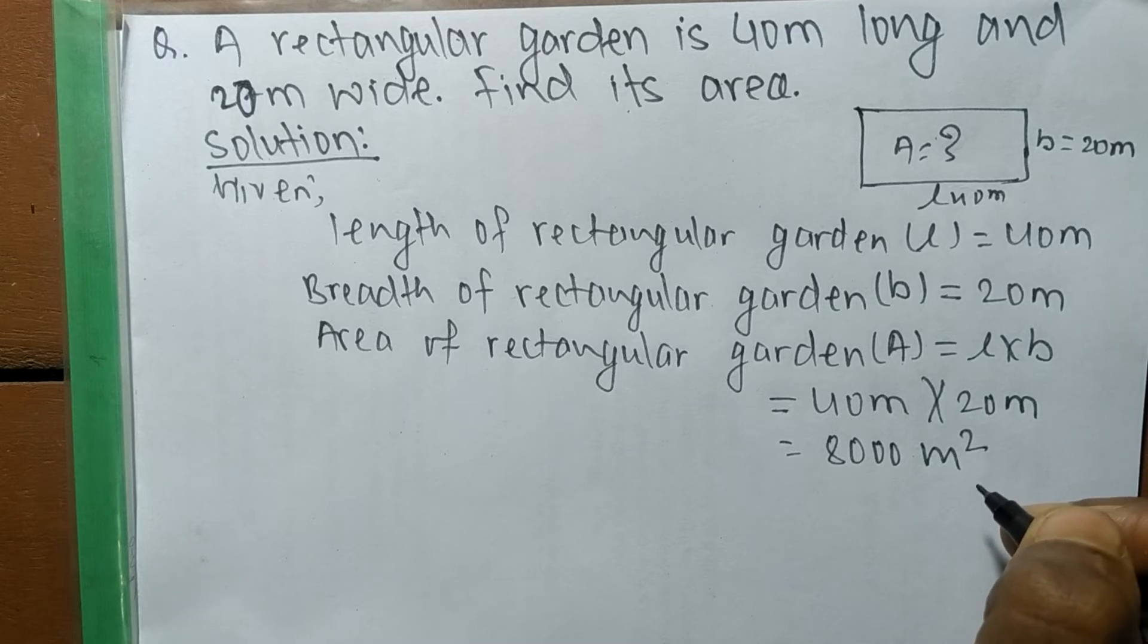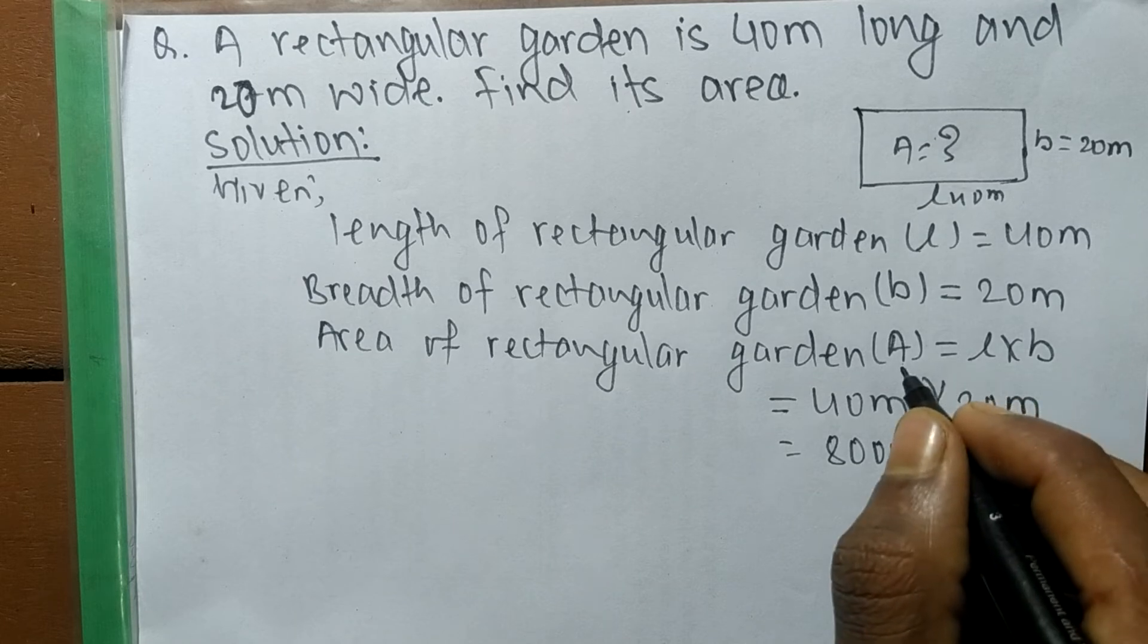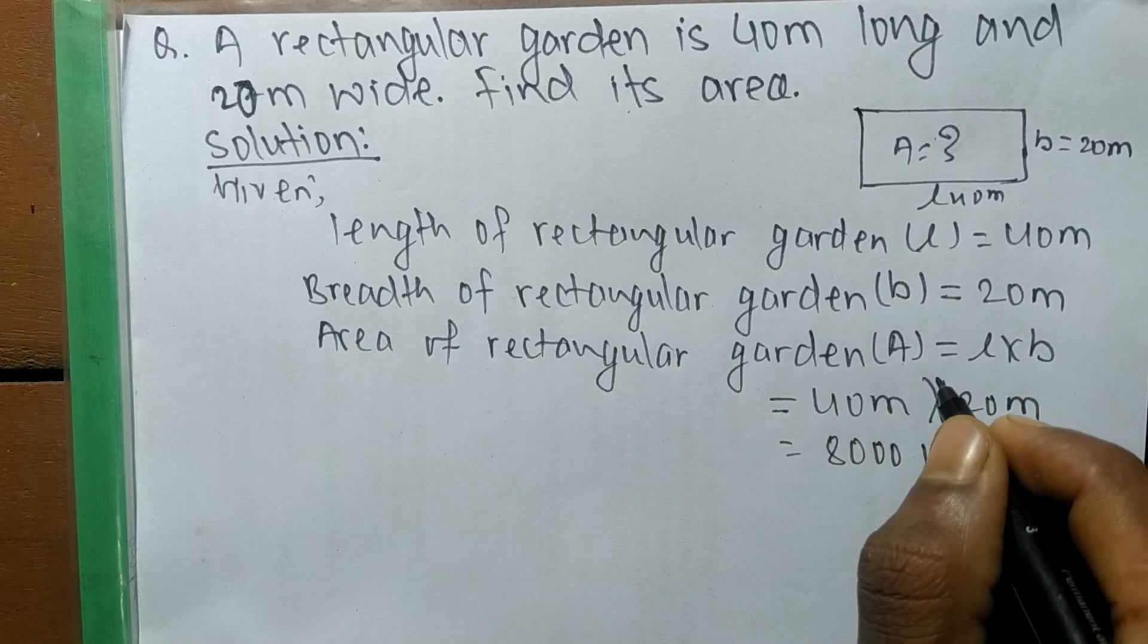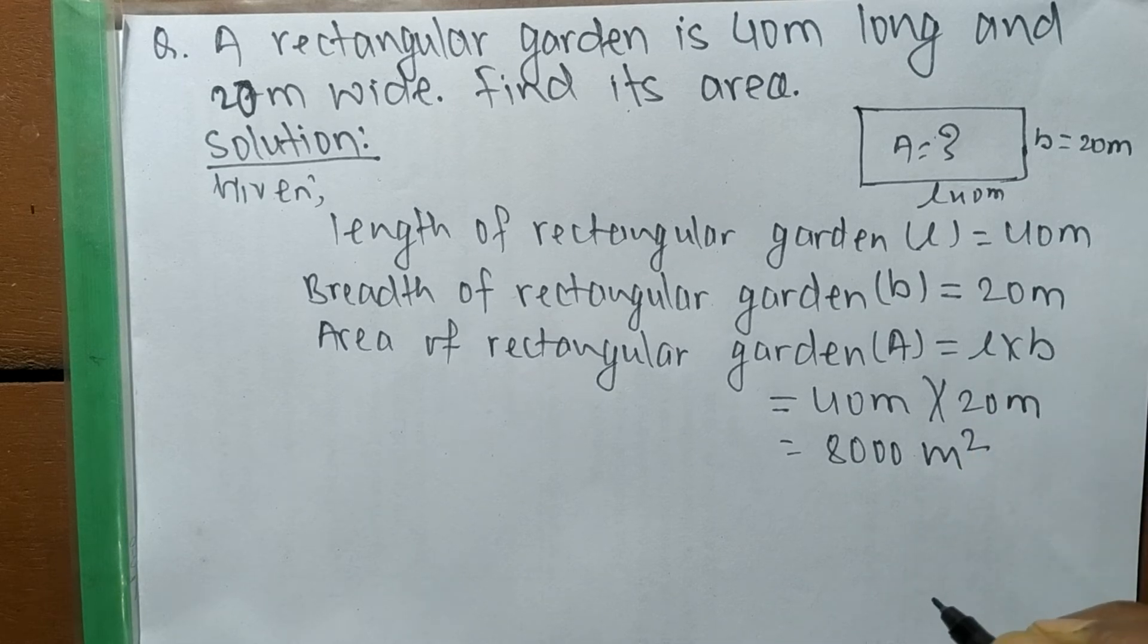So in this way we can solve problems related to rectangle. Where length and breadth is given, then we simply use A is equal to, means area of a rectangle is equal to, L into B, means length times breadth.